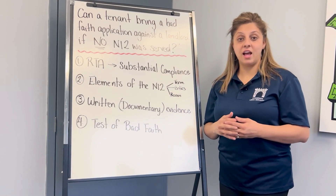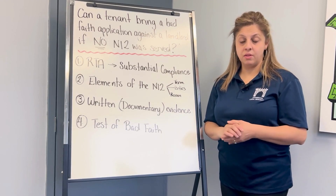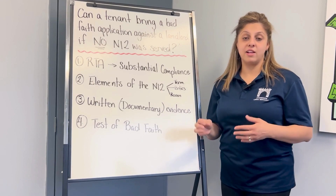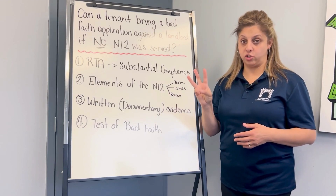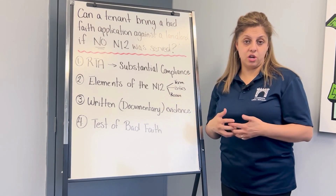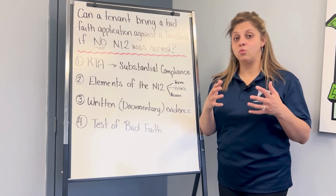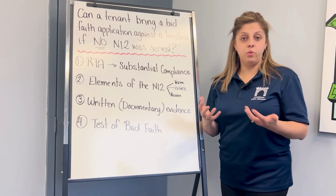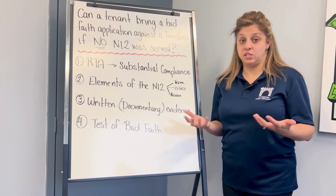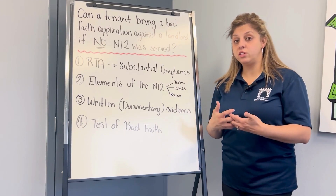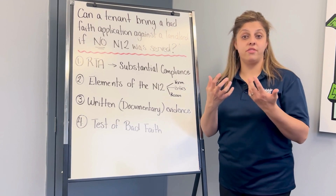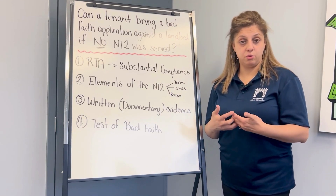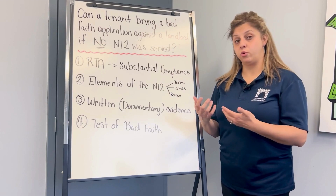The board then actually has a test for bad faith, and in accordance with section 57 of the Act, the board asks three questions. Question one: did the tenant rely on the N12 — or in this case, the notice or email that the landlord provided them — in order to make a move?